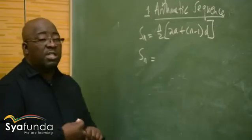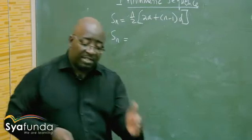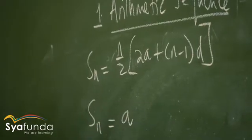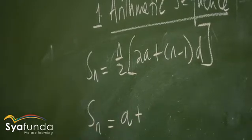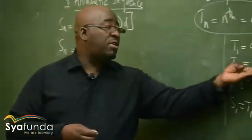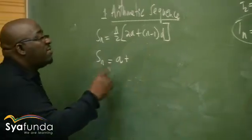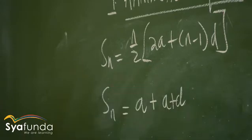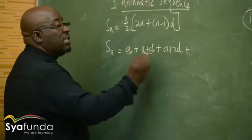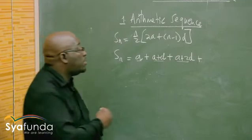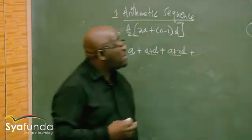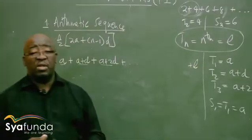But where does the formula come from? Let's do this. Whenever we are adding, we start from the first term and add up to the last term. The first term we refer to as A. We add to the second term, which is a plus d, then a plus 2d, and so on, up until the last term — which I refer to as L. Remember what I said about the last term; keep that in mind.